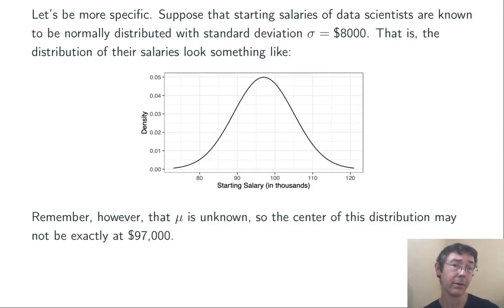Let's get a little more specific with our example. Suppose that the starting salaries of data scientists are known to be normally distributed with standard deviation $8,000. That's a population standard deviation, by the way.